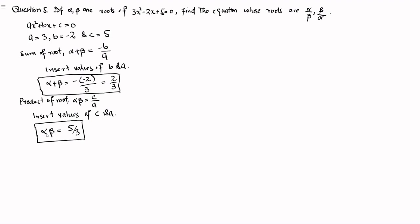Now we will find the sum and product of the roots of the required quadratic equation. The sum of the roots S equals alpha by beta plus beta by alpha. Taking alpha beta as the common denominator, this becomes alpha squared plus beta squared divided by alpha beta. We have the value for alpha beta which is 5 by 3, but we do not yet have the value of alpha squared plus beta squared.